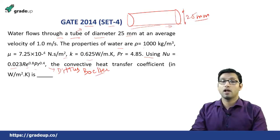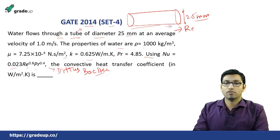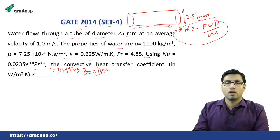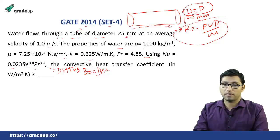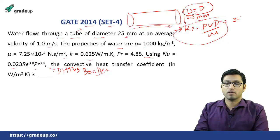First, you have to find the Reynolds number: Re = ρVd/μ. Rho, velocity (1 m/s), and d are given. Since this is a pipe flow, the characteristic dimension d equals the diameter of the pipe, which is 25 mm — convert it to meters. After putting all these values, you get Reynolds number equal to 34482.75. Since this is greater than 4000, this is turbulent flow.